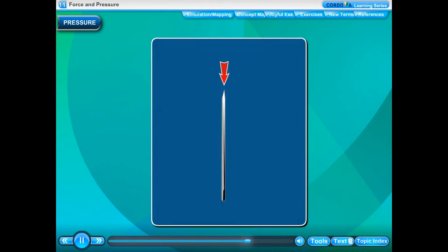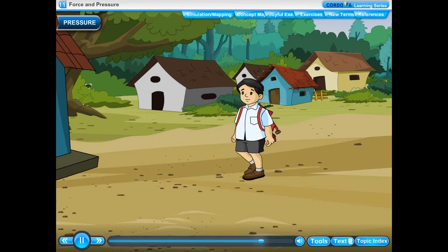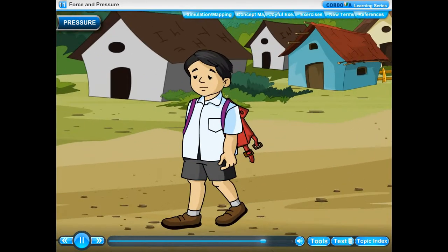The tip of a sewing needle is sharp and pointed. This may put the force on a very small area of the cloth, producing a large pressure sufficient to pierce the cloth being stitched.